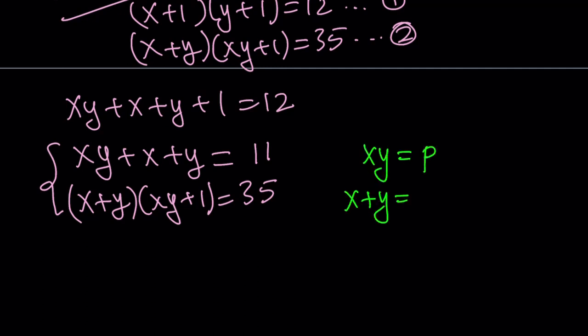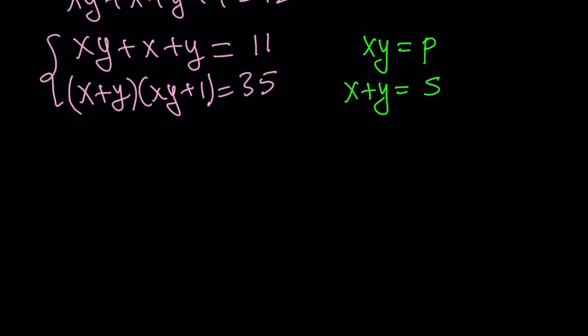And x plus y, s for sum. And then my equation turns into the following: p plus s equals 11. And then s times p plus 1 is equal to 35. So this is my new system now.